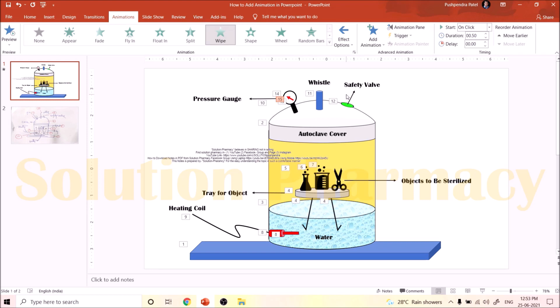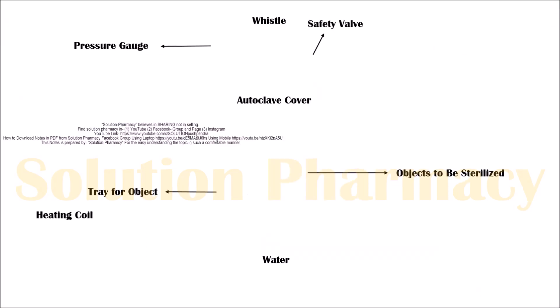Next, go to the Slide Show mode button in the lower right corner. You can see the screen is completely blank — not a single part of the autoclave is visible. This means all parts of the autoclave are animated. If any part had not been animated, it would appear on screen from the beginning when we enter Slide Show mode. However, you can see that only the labels are appearing on screen because we have not yet added animation to the labels.